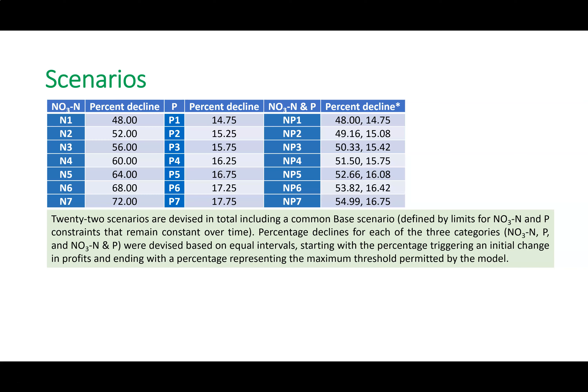The reason we don't go beyond 72% for nitrate is that if you exceed that level, the model becomes infeasible — meaning no optimal land use configuration can achieve a 72% annual reduction in nitrate loadings over seven years. For this presentation, we focus on 48% to 72% reduction for nitrate and 14.75% to 17.75% for phosphate. When combining both constraints, the feasible ranges differ because the model must simultaneously satisfy both.